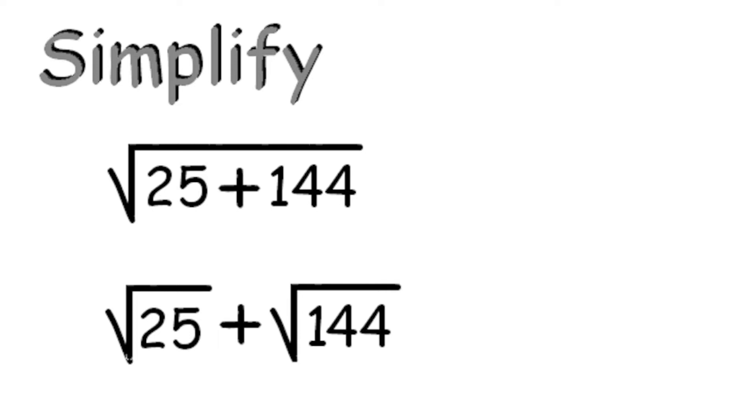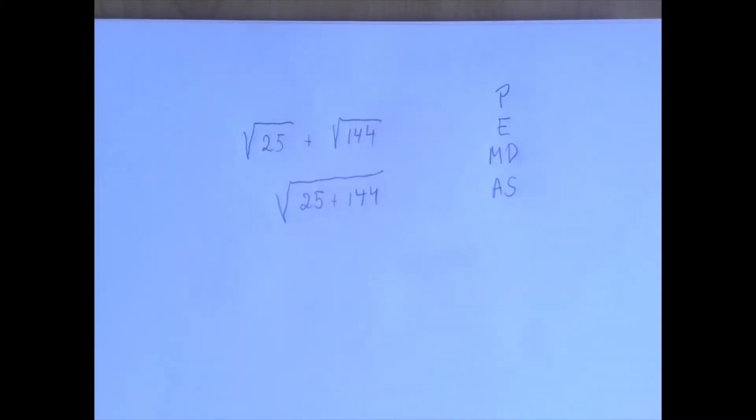We have, again, some order of operations problem. What happens to order of operations? This is the order of operations we had so far. Where do square roots place in this hierarchy? The answer is it's exactly at the level as exponents are.